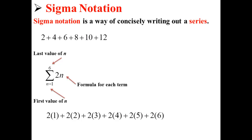So we're going to plug n into our equation 2n for each value from 1 to 6. This sigma notation is saying we're taking 2 times 1, plus 2 times 2, plus 2 times 3, plus 2 times 4, plus 2 times 5, plus 2 times 6.